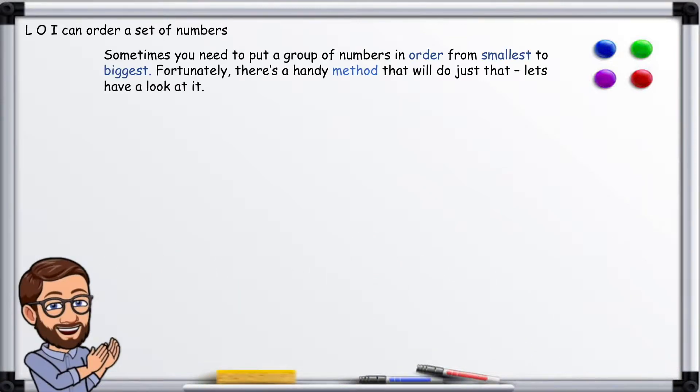Sometimes you need to put a group of numbers in order from smallest to biggest. Fortunately, there's a handy method that will do just that. Let's look at it.